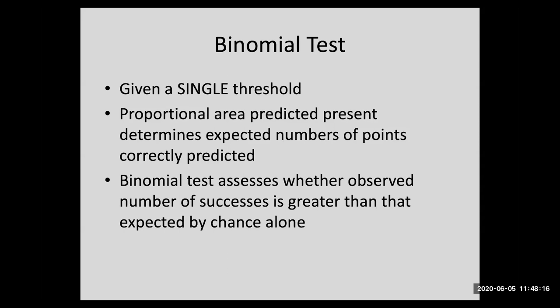So imagine just throwing some paint at a white sheet of paper and using that as your prediction. It shouldn't have any predictive ability. And so if that paint covers a quarter of the area of your map, then one quarter of points will fall within the paint area under random expectations. And then we use a binomial test, a cumulative binomial test to assess whether the observed number of successes is greater than what we expect by chance alone.